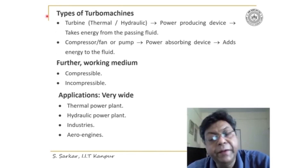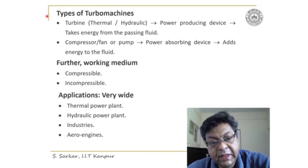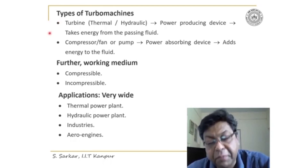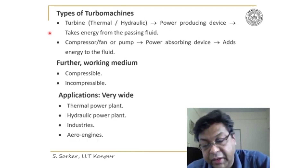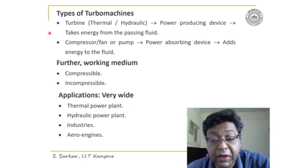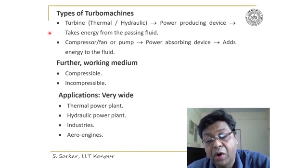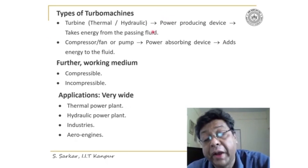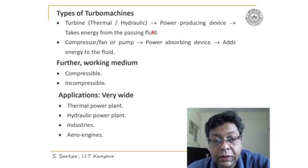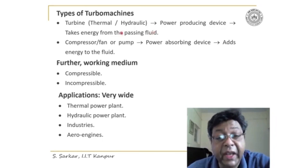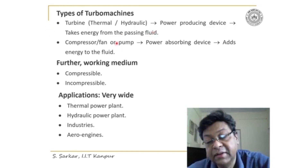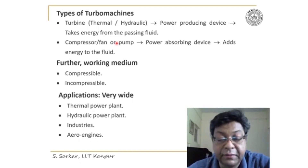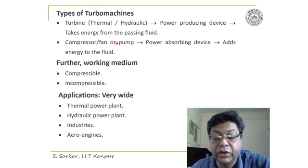Let us begin with a turbine. A turbine could be a thermal turbine or a hydraulic turbine. A steam turbine is an example of a thermal turbine, and the Kaplan turbine is an example of a hydraulic machine. A turbine is a power-producing device that takes energy from the passing fluid — the fluid is expanded as it passes through a turbine, and the pressure at the exit of the turbine will decrease.